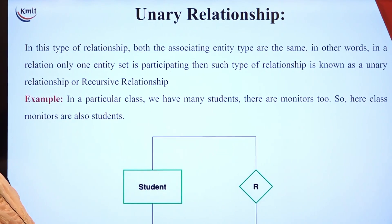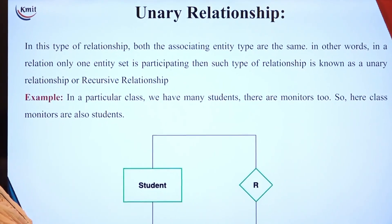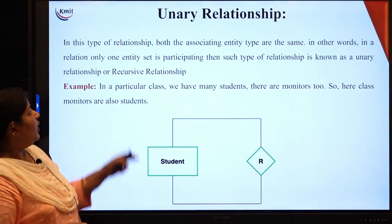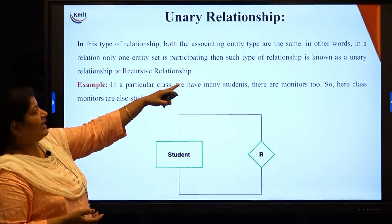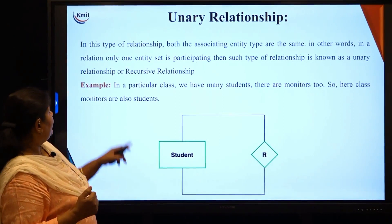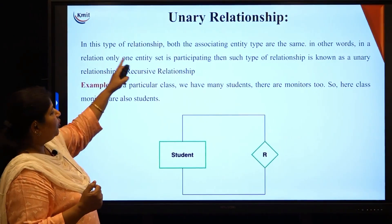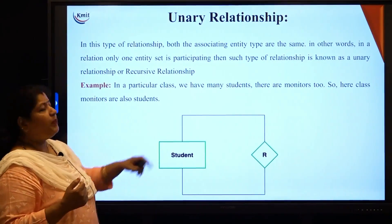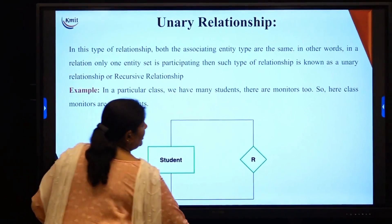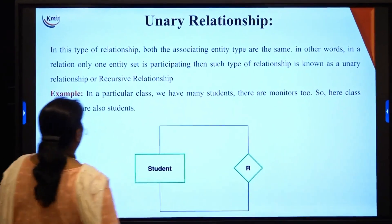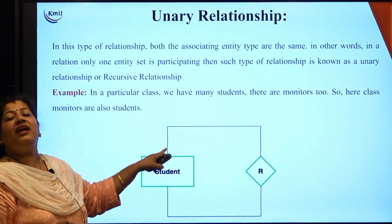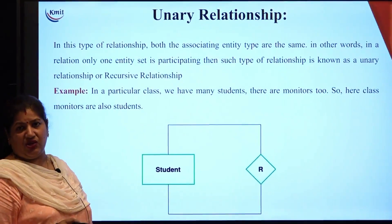What do we mean by a unary relationship? In this type of relationship, both the associating entity types are the same. That means in a relation, only one entity is participating. Such a relationship is known as a unary relationship, or also a recursive relationship.